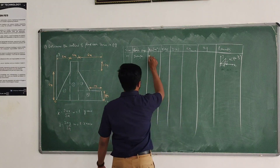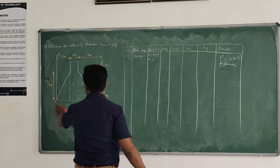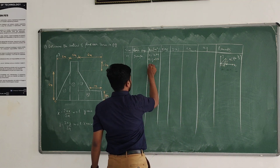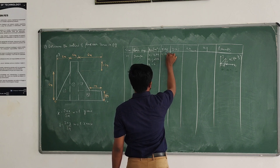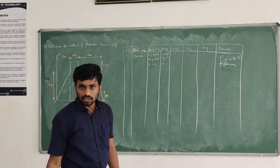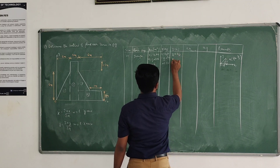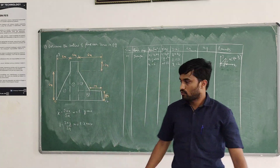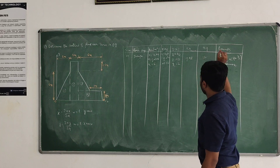Area A1 equals half times base times height. Base is 2 meters, height is 6 meters, so A1 = (1/2)(2)(6) = 6 square meters. X1 = two-thirds of B = (2/3)(2) = 4/3 = 1.33 m. Y1 = H/3 = 6/3 = 2 m. Therefore AX = 6 × 1.33 = 7.98, and AY = 6 × 2 = 12. The first basic shape is complete.